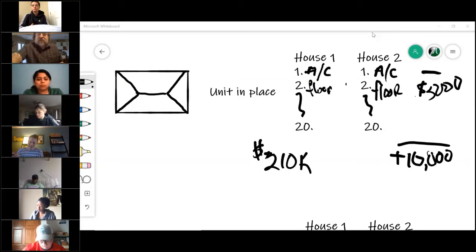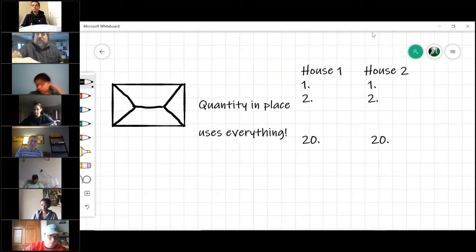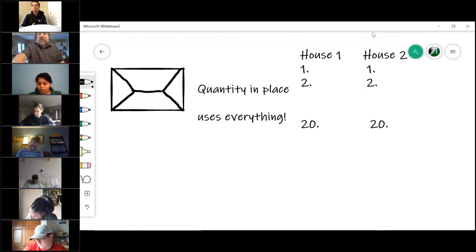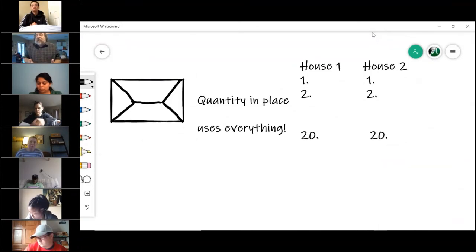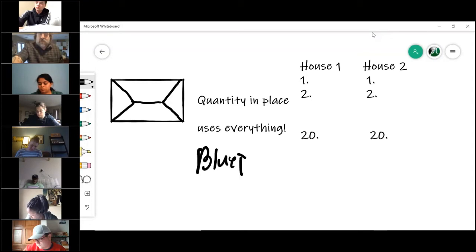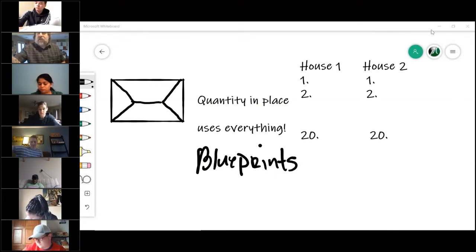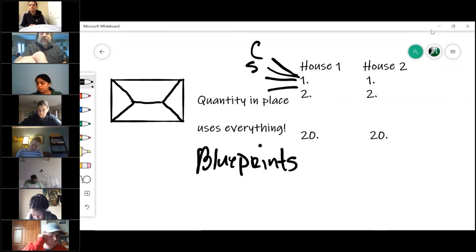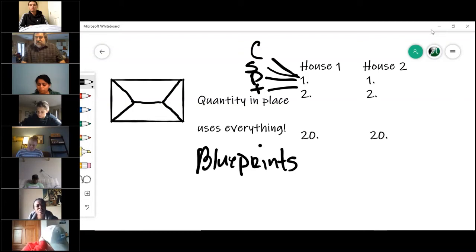Now the third method is called the quantity survey. In the quantity survey method we are looking at everything. You need the blueprints to do a quantity survey method. Instead of looking at the flooring unit, you may say well the flooring unit is actually made up of carpet, subfloor, padding, tacking strips, all kinds of stuff. You are looking at everything.